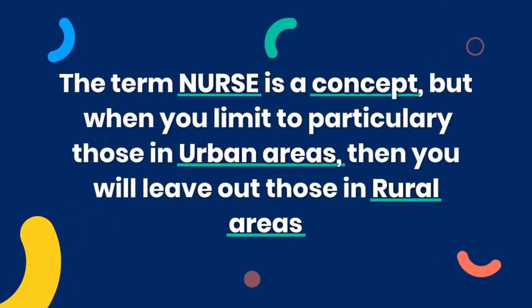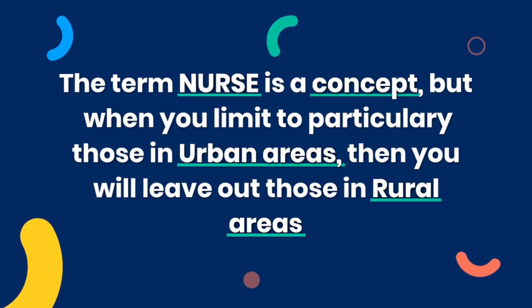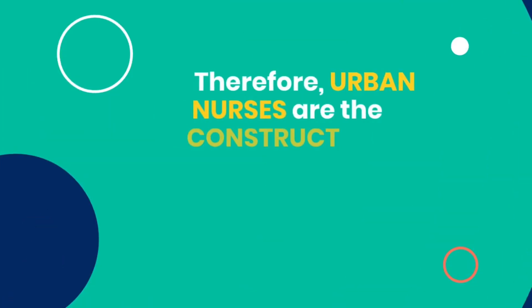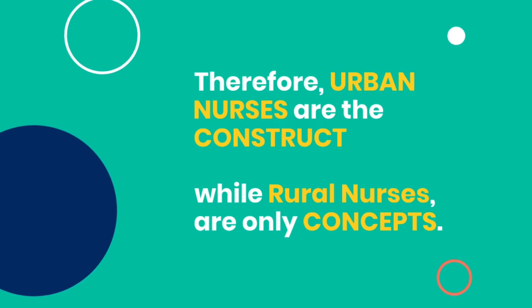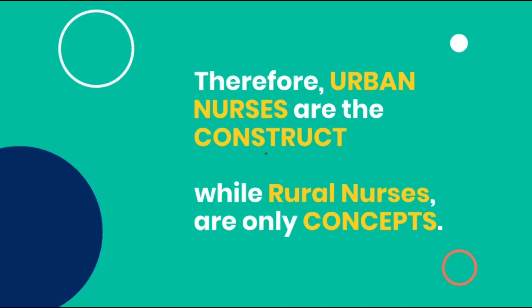Using the same example — nurses' job satisfaction in urban areas — the term 'nurse' is a concept, but when you limit it specifically to those in urban areas, you leave out nurses in rural areas. So when you just talk about a nurse it is a concept, but when you specifically look for nurses in urban areas, it is no longer just a concept — it becomes a construct. Think of it like building a house: you may buy tiles and cement, and those are concepts, but when you decide to use only cement, cement becomes a construct.